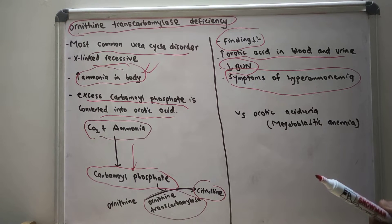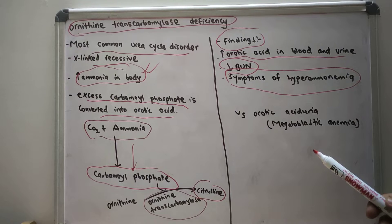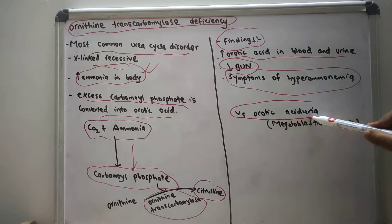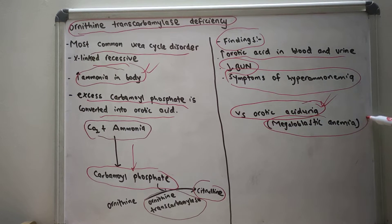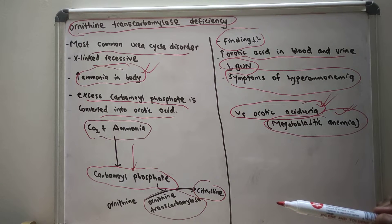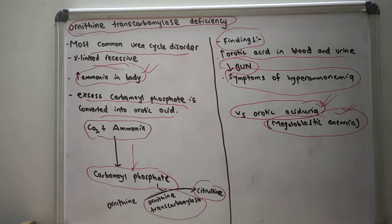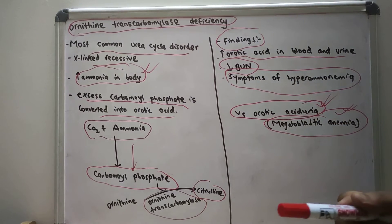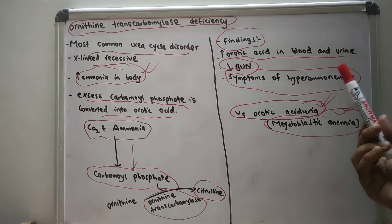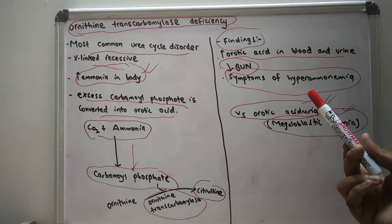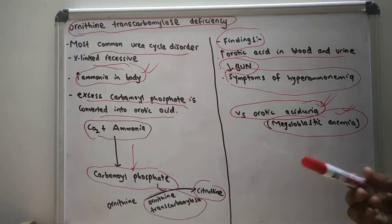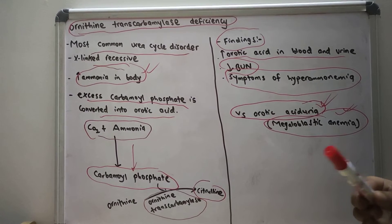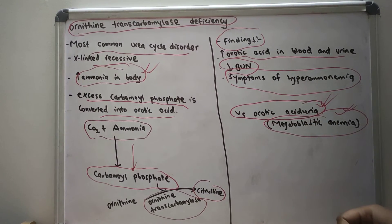It is important to differentiate this from orotic aciduria. In orotic aciduria, we also see megaloblastic anemia, whereas in ornithine transcarbamylase deficiency we do not see megaloblastic anemia. This concludes our topic — we briefly discussed the introduction, the various findings of OTC deficiency, and the key difference from orotic aciduria.